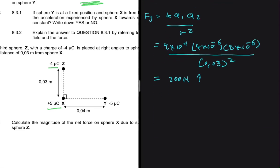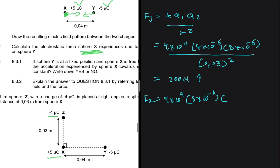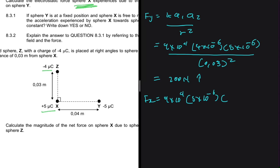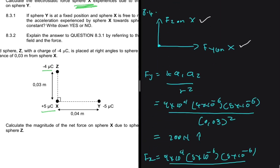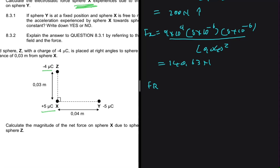And then F_Y on X. We're going to have K Q1 Q2 divided by R squared again. So let's not copy the formula down again. Let's just go ahead and substitute. So for K, we have 9 times 10 to the power of 9. Then Q1, we have 5 times 10 to the minus 6. We've already calculated this above in 8.2. But it's fine, let's just go ahead and finish it up. So we have 5 times 10 to the minus 6 divided by 0.04 squared. So this will be equal to 140.63 newtons.